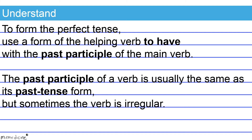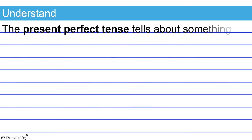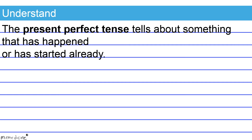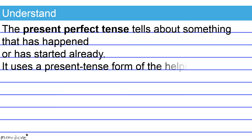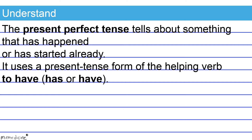But sometimes the verb is irregular. The present perfect tense tells about something that has happened or has started already. It uses a present tense form of the helping verb 'to have,' which is either going to be 'has' or 'have.'